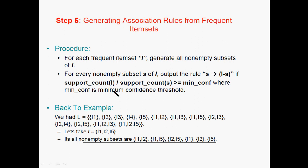When we are using the Frequent Item Set, we are using the Support and Confidence. We are using the Association Tools to generate the Association Tools. So, we are using the Minimum Support Result. I am using the Support Item Set, and we are using the Frequent Item Set.